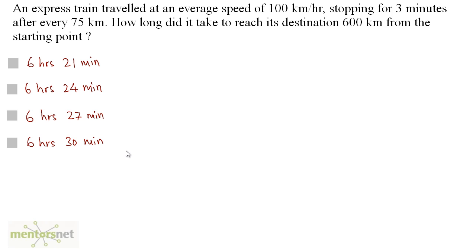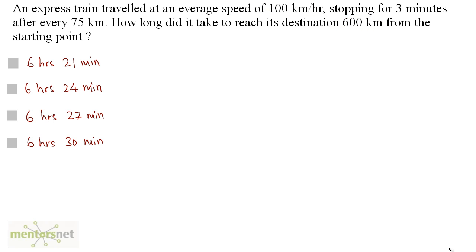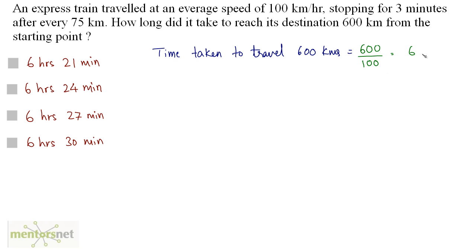An express train travelled at an average speed of 100 km per hour, stopping for 3 minutes after every 75 km. How long did it take to reach its destination 600 km from the starting point? You have been given the speed and the distance. Let us first calculate the time taken to travel 600 km. It is equal to the distance, 600 km, upon the speed, 100 km per hour, so it is equal to 6 hours.